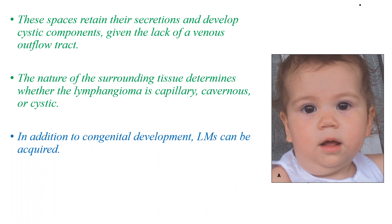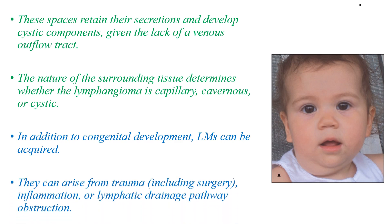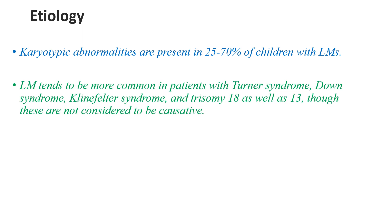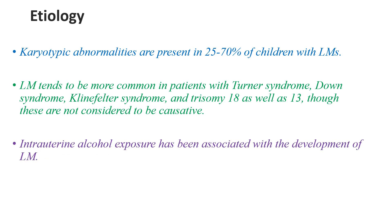In addition to congenital development, cystic hygroma can be acquired. They can arise from trauma, including surgery, inflammation, or lymphatic drainage pathway obstruction. Karyotypic abnormalities are present in 25–70% of children with lymphatic malformation or cystic hygroma. Cystic hygroma tends to be more common in patients with Turner syndrome, Down syndrome, Klinefelter syndrome, and trisomy 18 as well as 13. These are considered associations rather than causative factors.